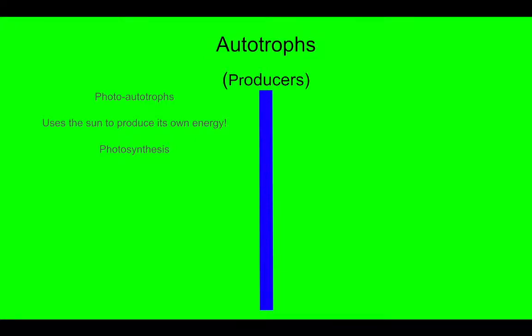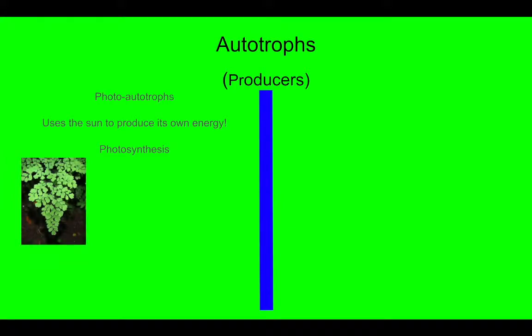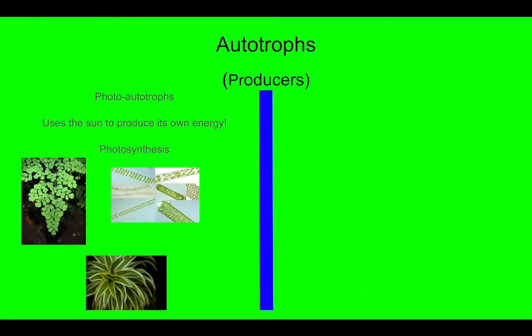A couple examples of photoautotrophs would be this tree, these different algae and bacteria, and this plant. All three of these examples are examples of photoautotrophs. They use the sun to produce glucose in a process called photosynthesis. This is our first type of autotrophs.